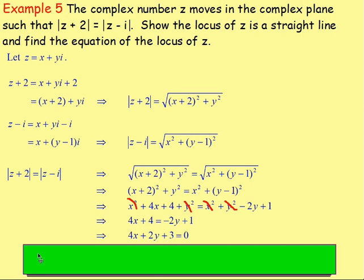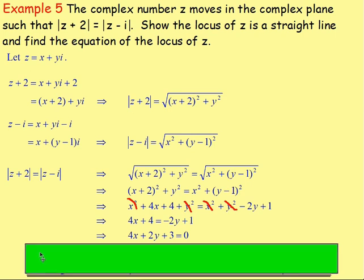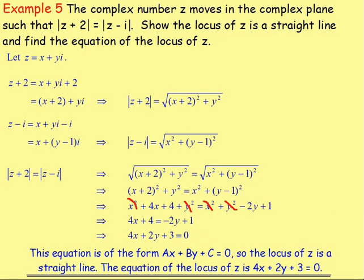This is of the form ax + by + c = 0, which is the equation of a straight line. So the locus of z is a straight line, with equation 4x + 2y + 3 = 0.